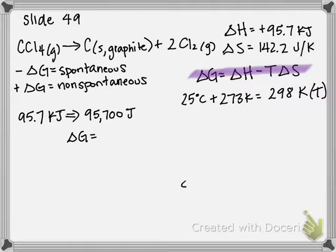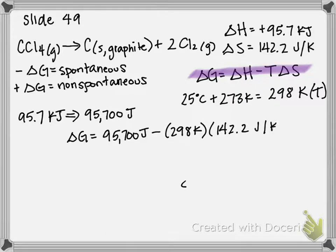It equals 95,700 joules minus 298 K times 142.2 joules per Kelvin. So notice Kelvin are going to cancel out, and this is why we had to have our enthalpy in joules, so that we could add and subtract the two.